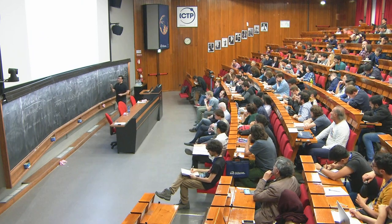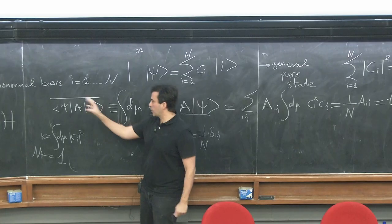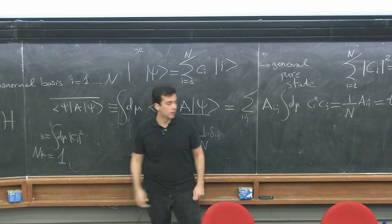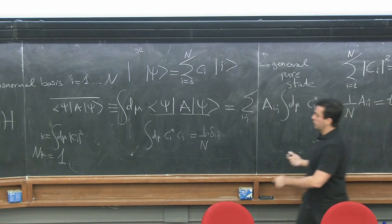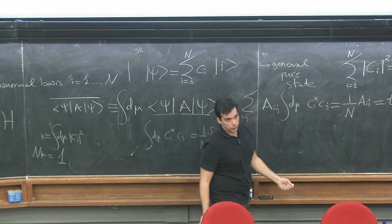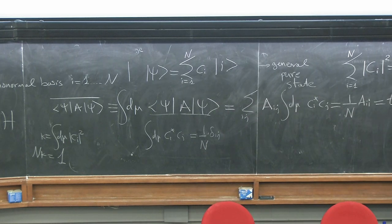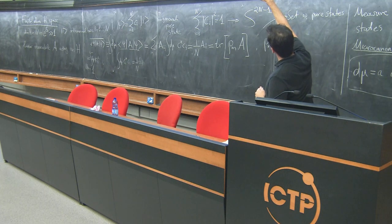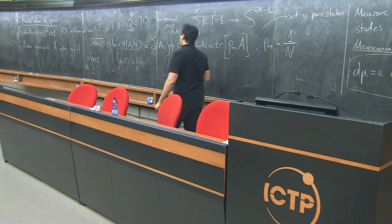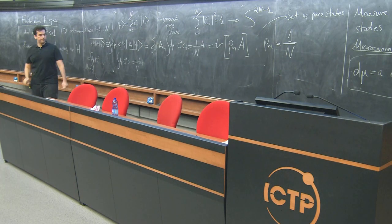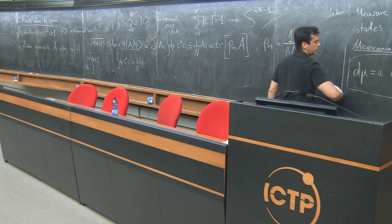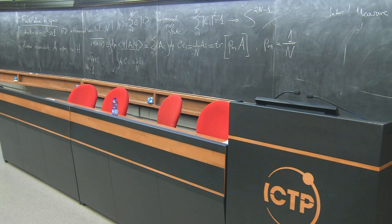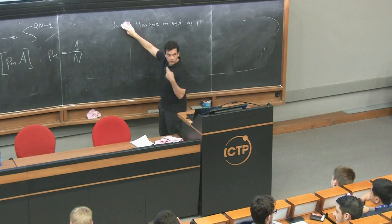To prove that different pure states actually look the same, we need to consider not only the average of the expectation values but also the variance — the average of (⟨ψ|A|ψ⟩ − ⟨⟨ψ|A|ψ⟩⟩)². This is where the large N will start to play a role.